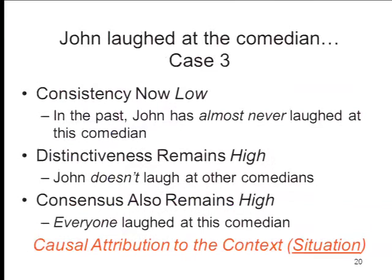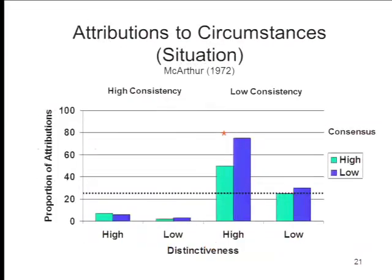Case three: John laughed at the comedian. Now consistency is low — John has almost never laughed at this comedian. Distinctiveness is high — John doesn't laugh at other comedians. And consensus is high — everyone laughed at this comedian. With low consistency, high distinctiveness, and high consensus, the attribution is driven toward the context — toward the situation. Everybody's drunk or something, so they're all laughing wildly. It's something John wouldn't ordinarily do. That's exactly what happened in the experiment: circumstances attribution.